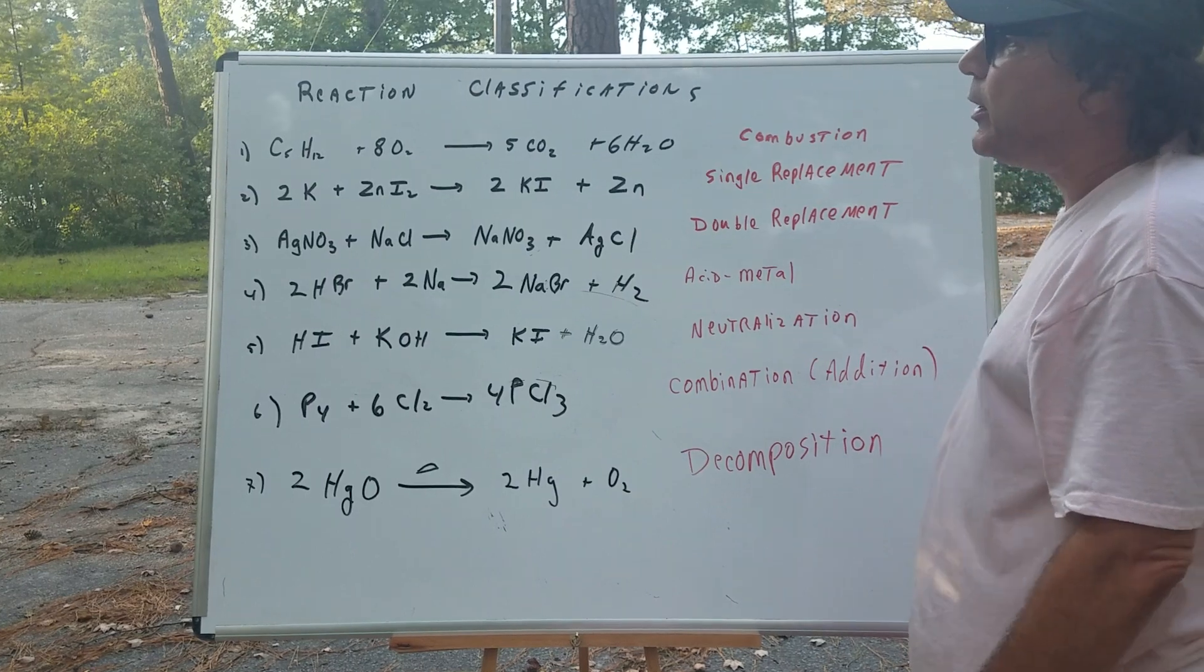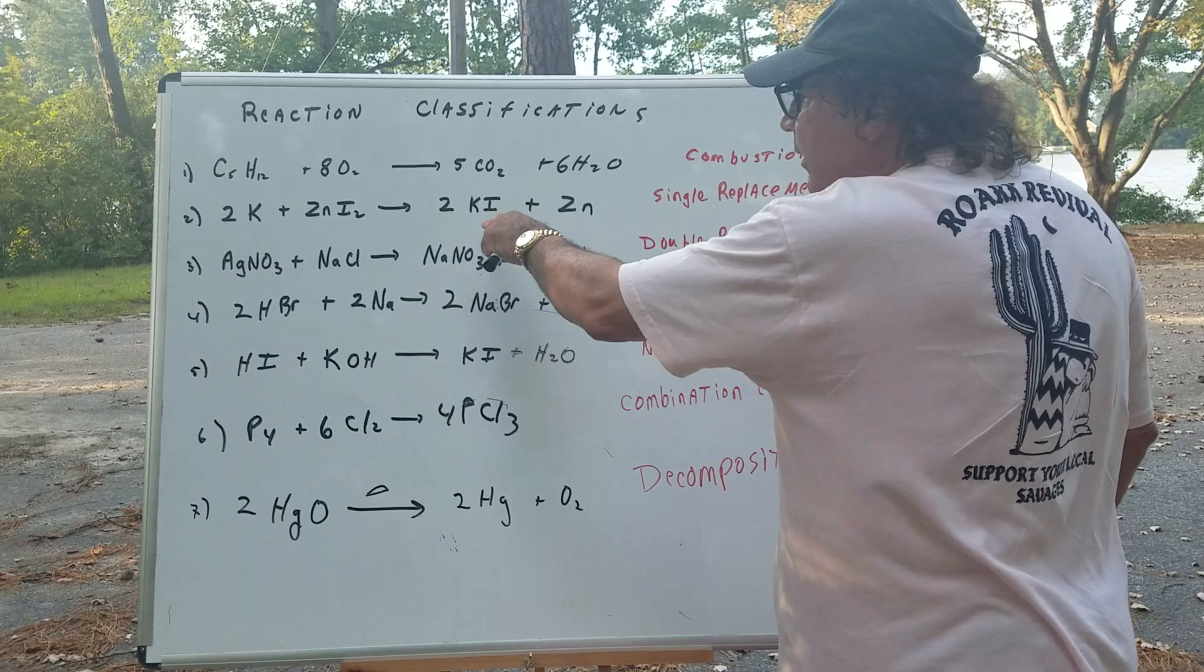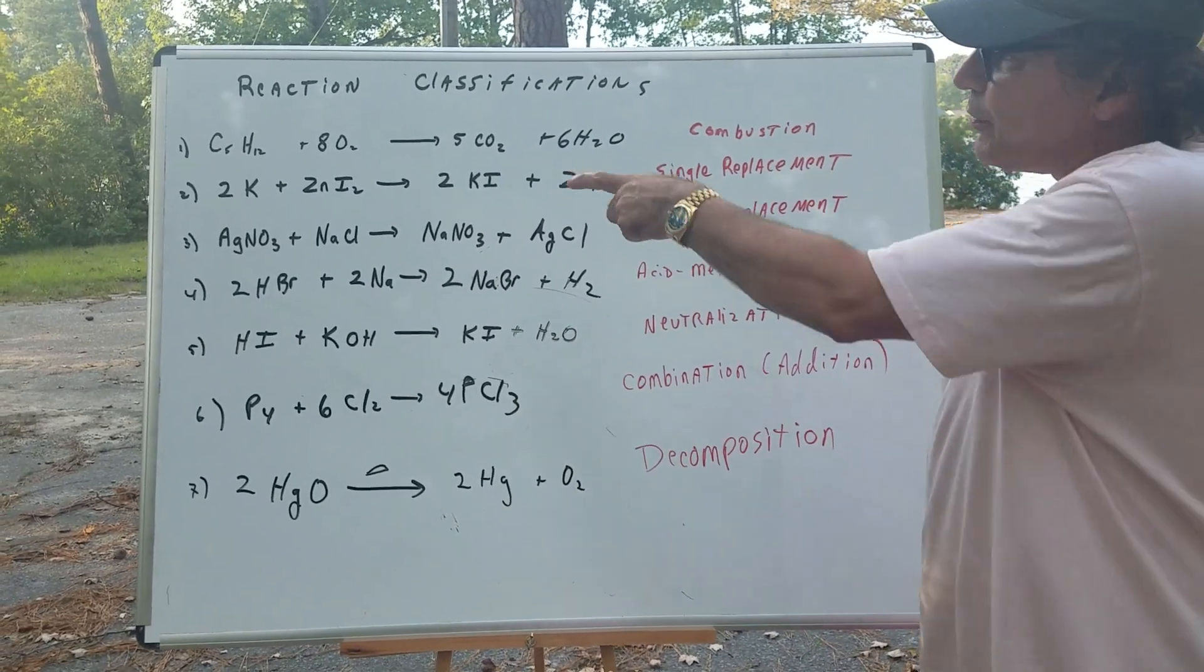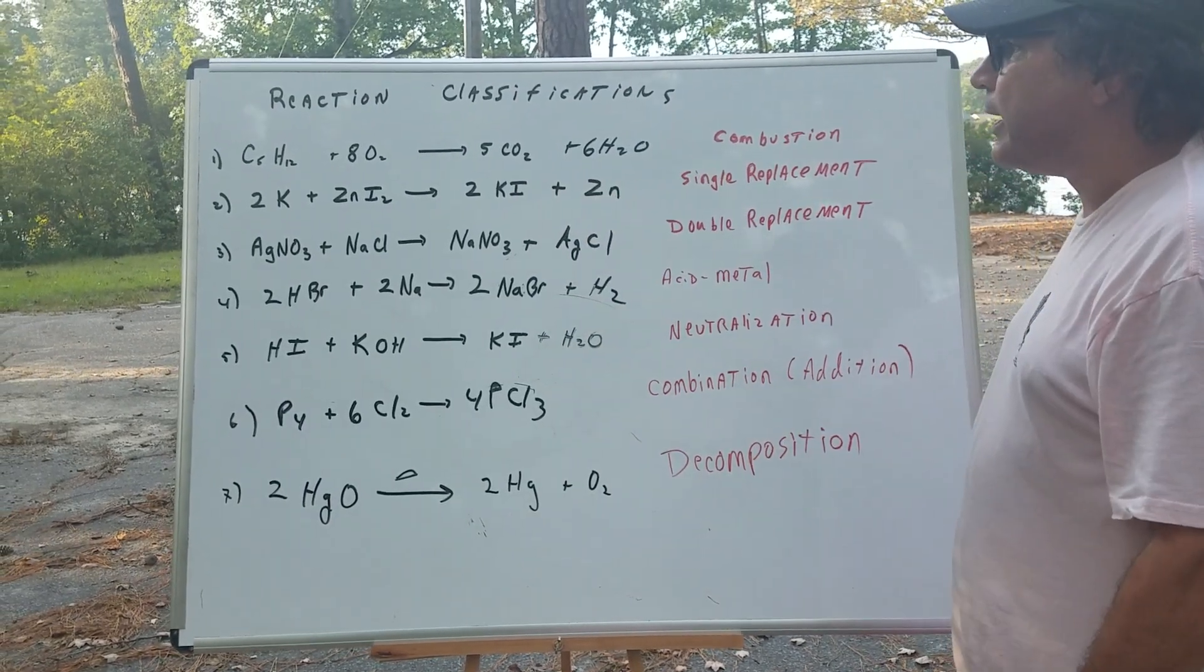Number two is showing a metal, here it's potassium, kicking out the zinc. That's known as a single replacement. The potassium is replaced with zinc, and we get potassium iodide and zinc metal.